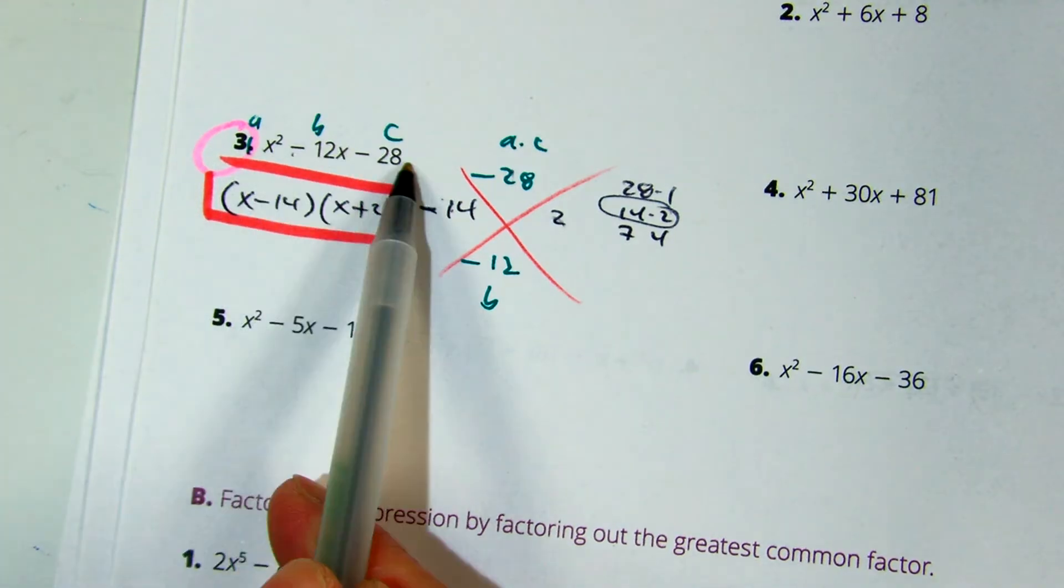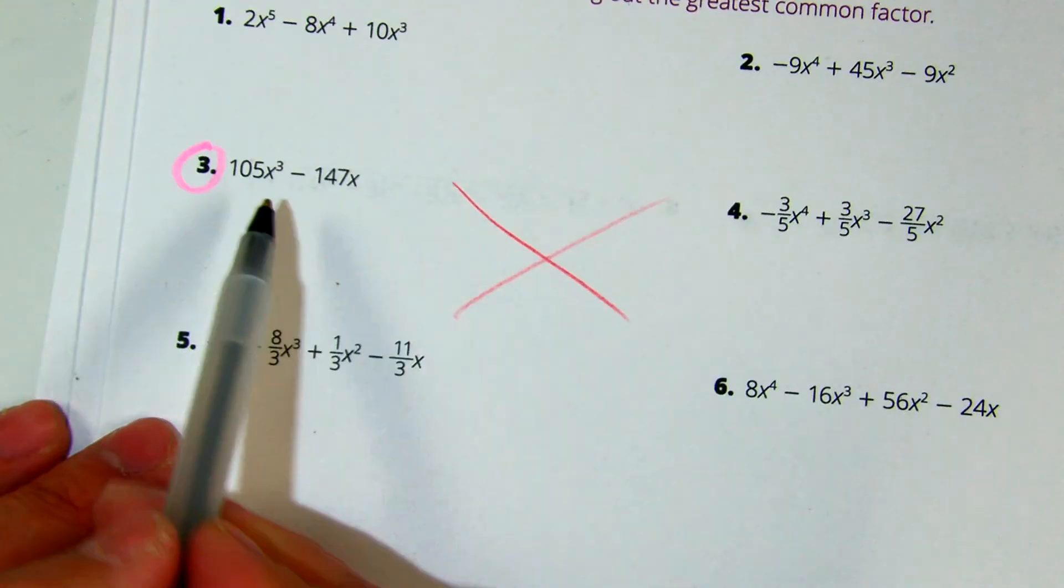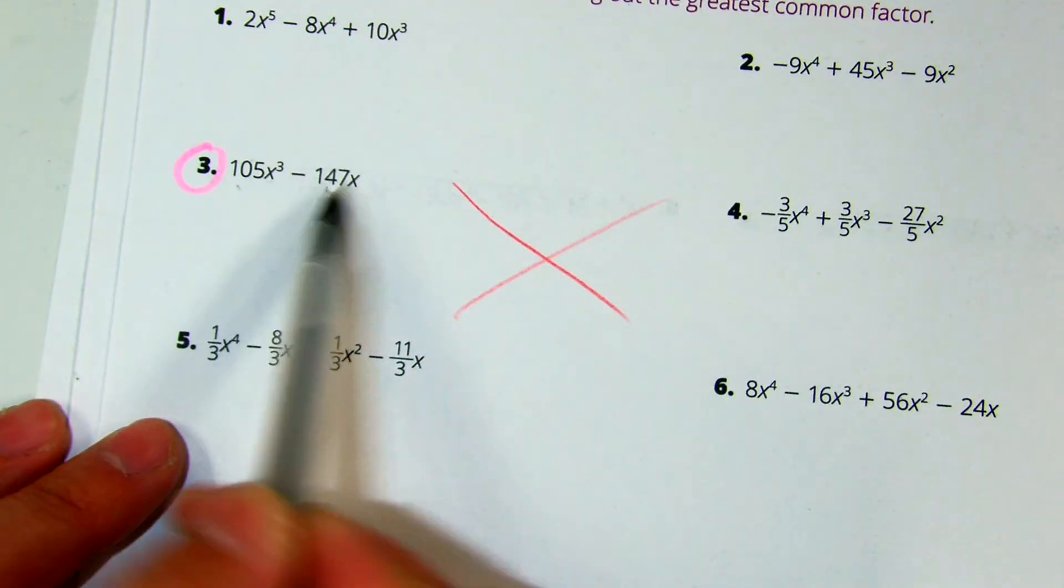1, negative 12, and negative 28. Even, even, odd. This is an odd number. This is an odd number.